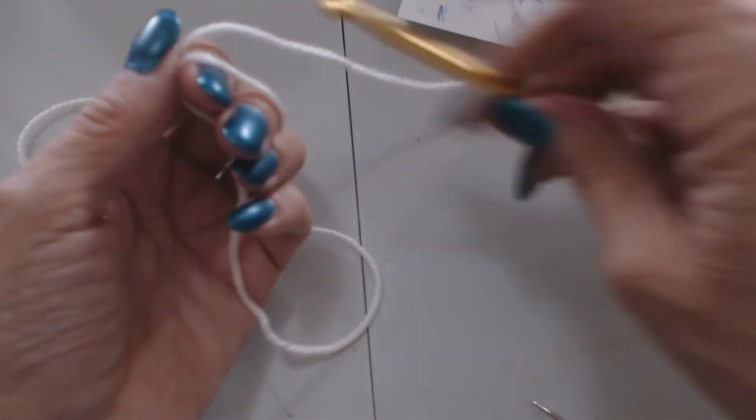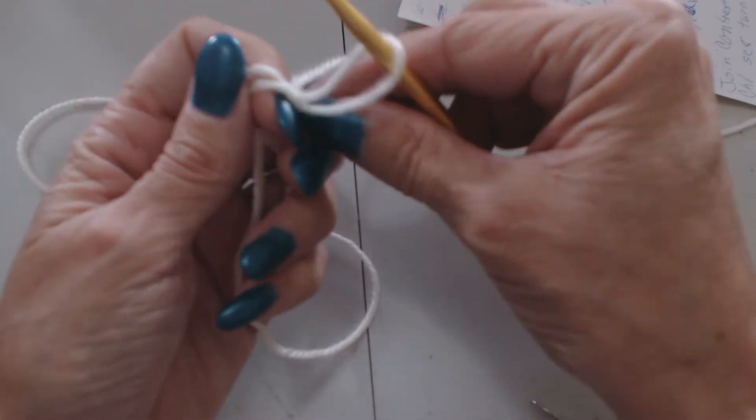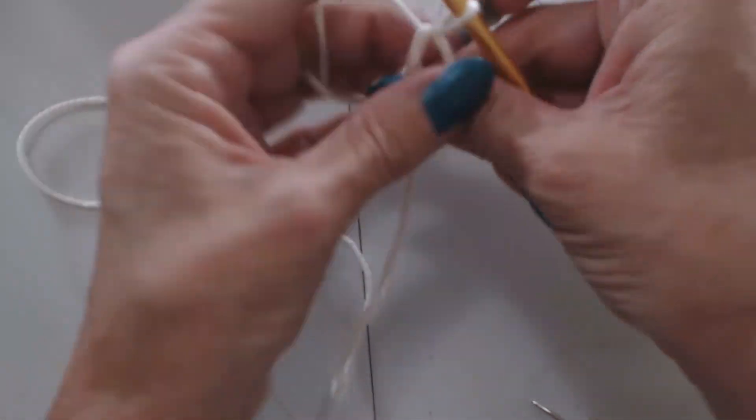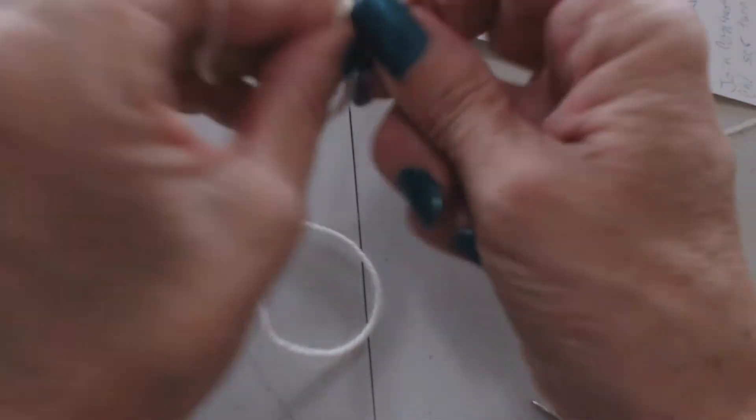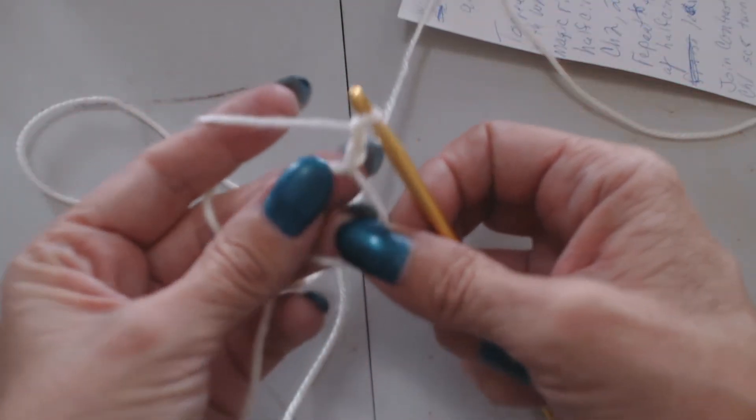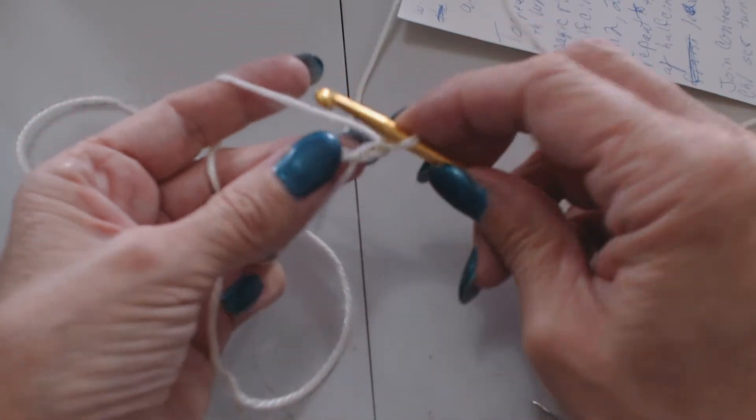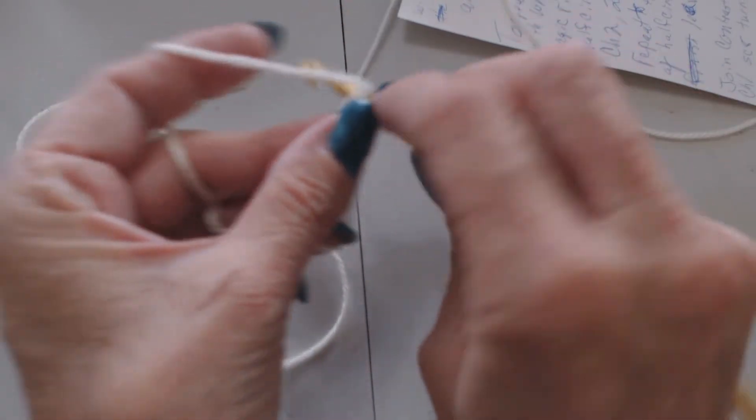We're going to do a magic ring and we need to chain two. Wasn't in there, but here's a magic ring and I chained two. Now I put in ten double crochet in this magic ring.